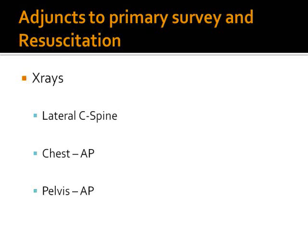We do three X-rays at the end of primary survey: a lateral c-spine X-ray, an anteroposterior chest X-ray, and a pelvic X-ray. These are done routinely because these are the commonest sites of significant injury, and when we do the X-rays, we can quickly rule out any injuries in these areas.